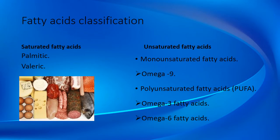Let's classify fatty acids. Fatty acids can be broadly divided into two groups: saturated fatty acids and unsaturated fatty acids. Examples of saturated fatty acids are palmitic and valeric acid. Unsaturated fatty acids are again divided into two groups: monounsaturated fatty acids and polyunsaturated fatty acids. Omega-9 is the monounsaturated fatty acid, and omega-3 and omega-6 fatty acids are polyunsaturated fatty acids.